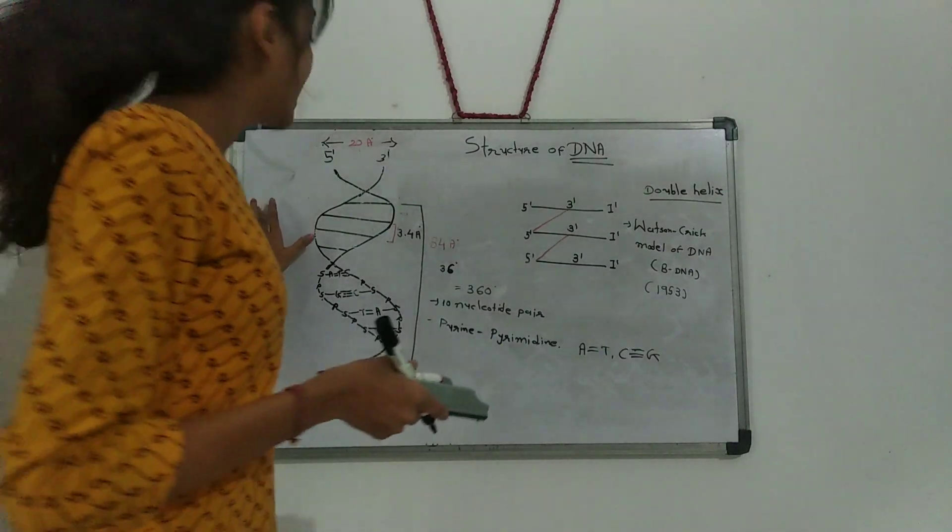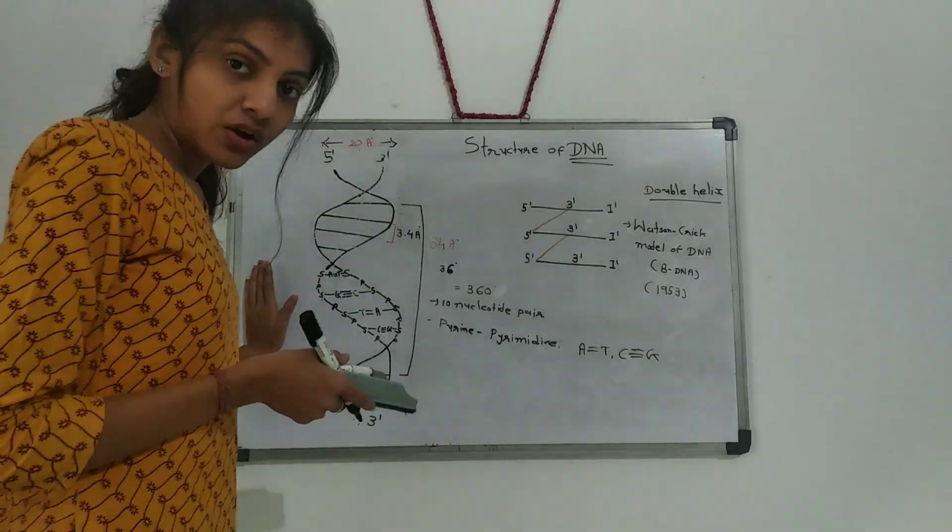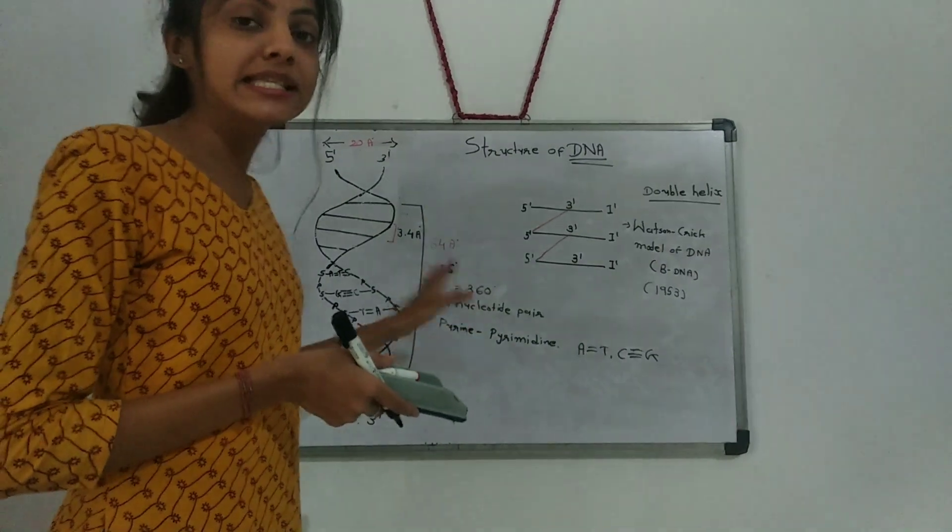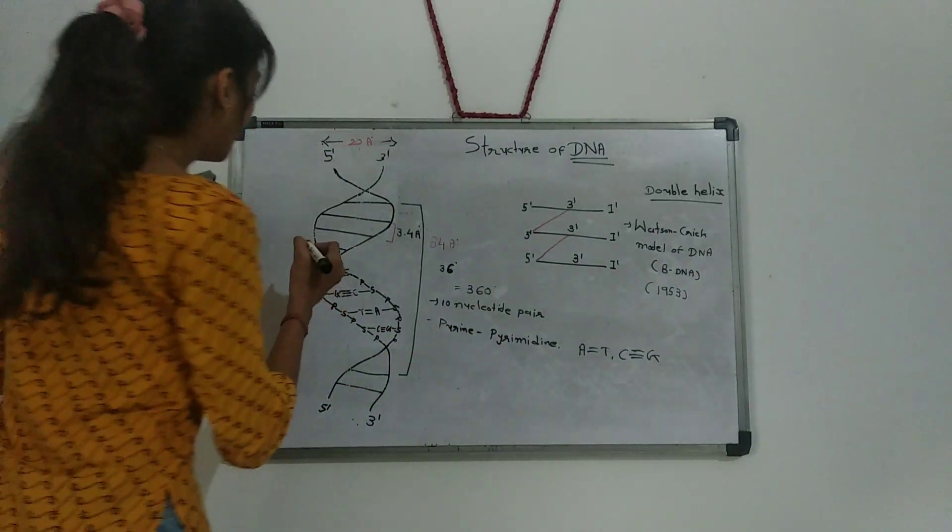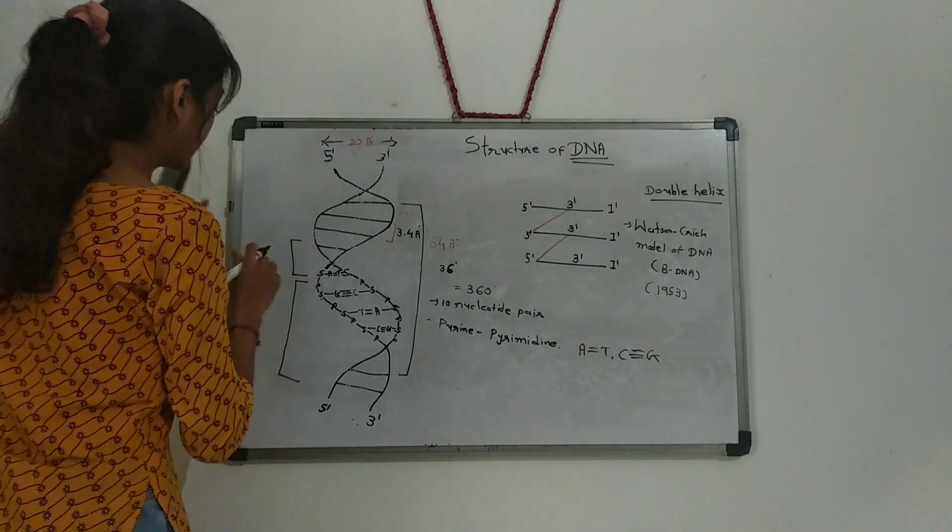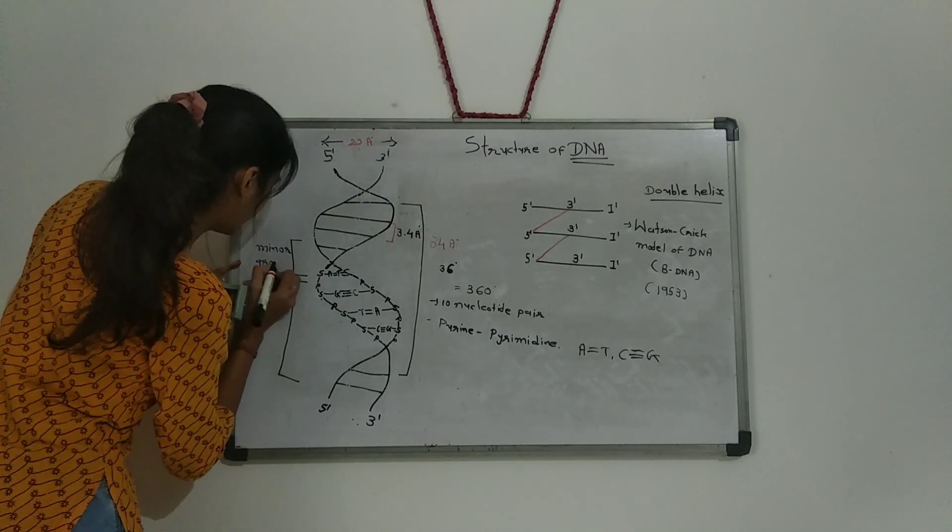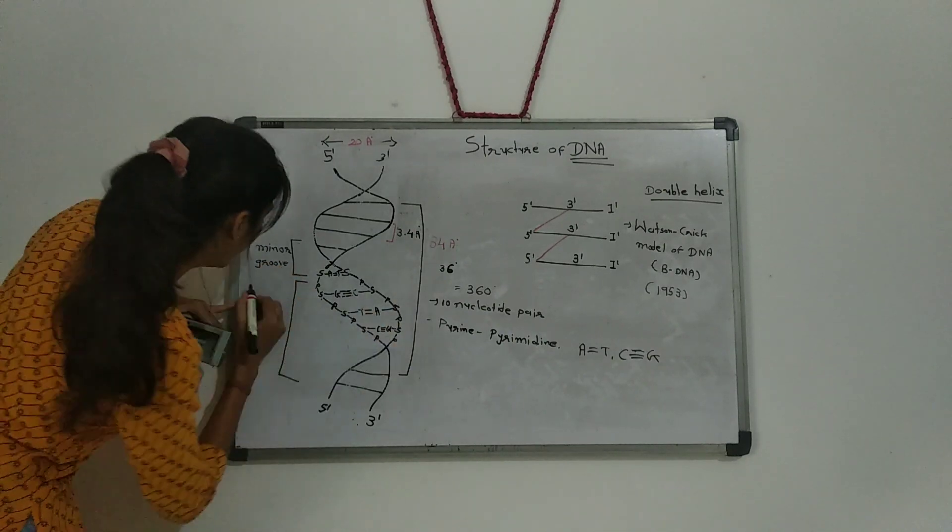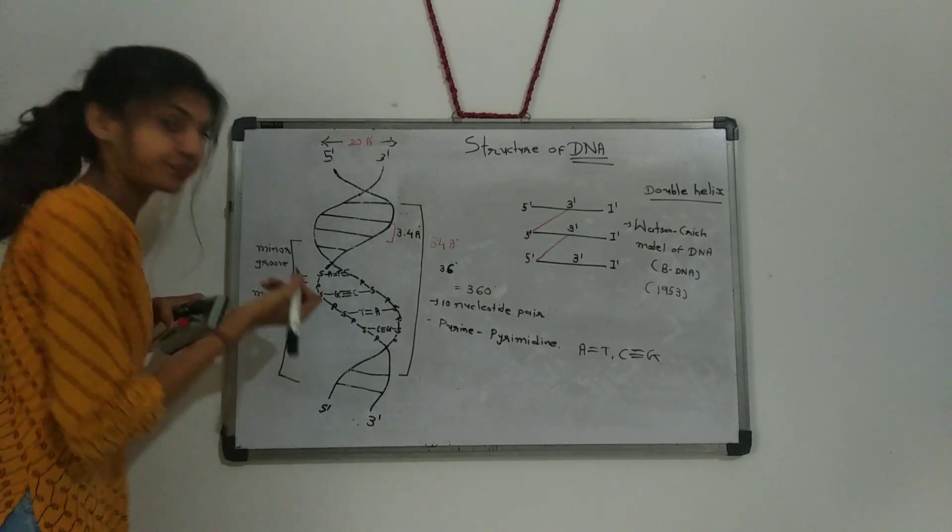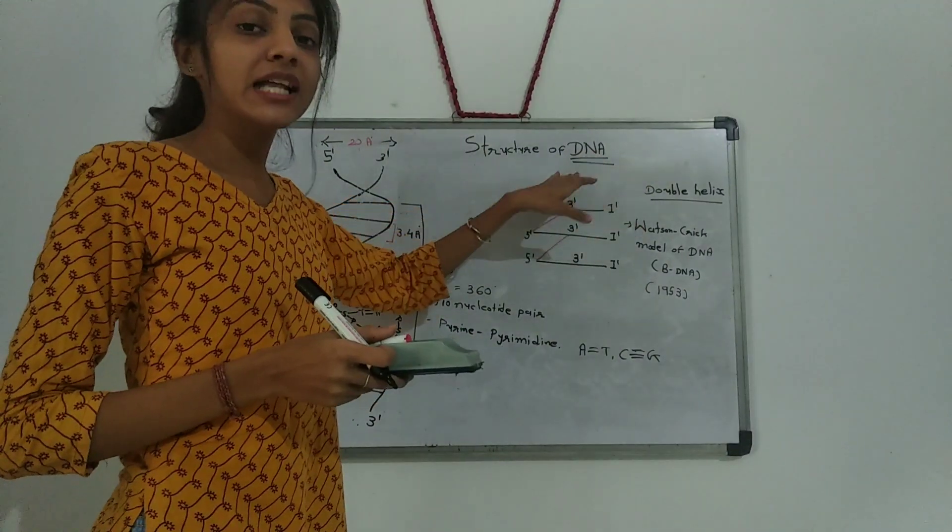The genetic material resides on one of the two strands that is known as the template strand or sense strand. And another one that is complementary to the template strand is known as the anti-sense strand. There are two grooves: the narrow minor groove and wide major groove.